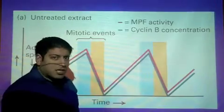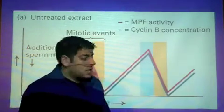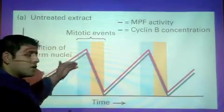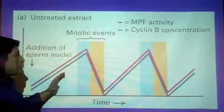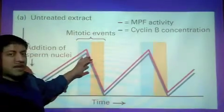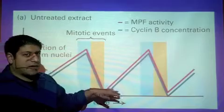We also saw the protein cyclin B, and we saw that cyclin B concentration was also fluctuating, and it too rose with MPF activity and fell with MPF activity.